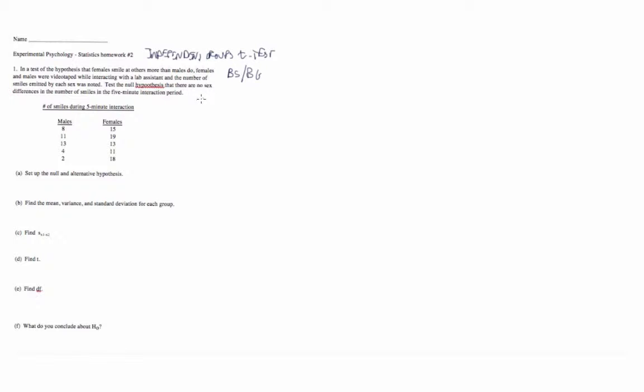Let me expand this out a little bit here. We're going to need the mean, variance, and standard deviation for each group, and then standard error, find t, find degrees of freedom, and then state a conclusion. I should put our null and alternative hypotheses up here first. The null hypothesis is going to be that mean 1 minus mean 2 is equal to 0. The alternative hypothesis is going to be that mean 1 minus mean 2 is not equal to 0. So we're going with a bidirectional hypothesis, as we always do.